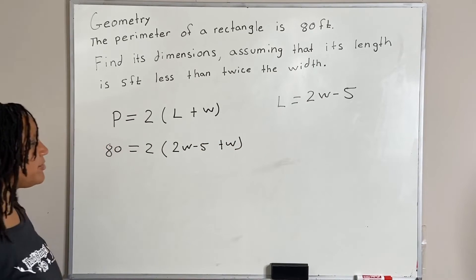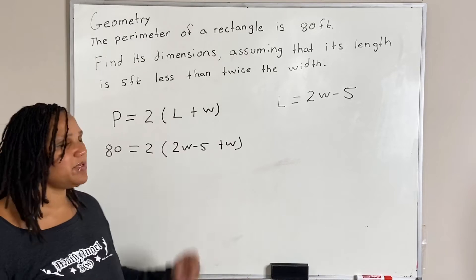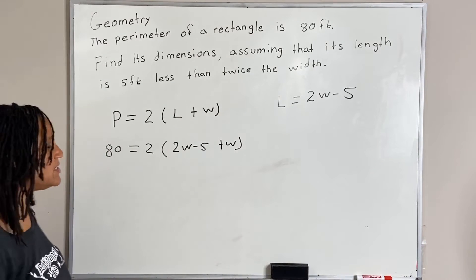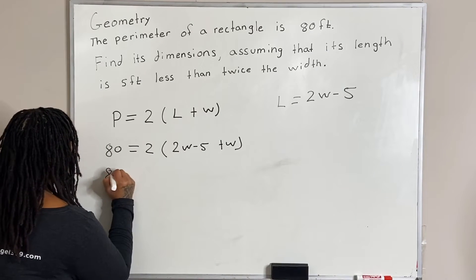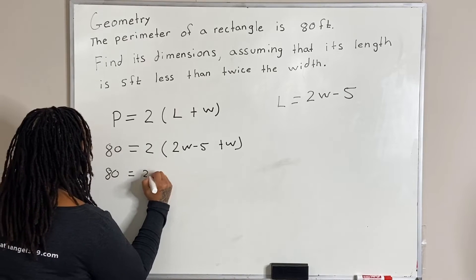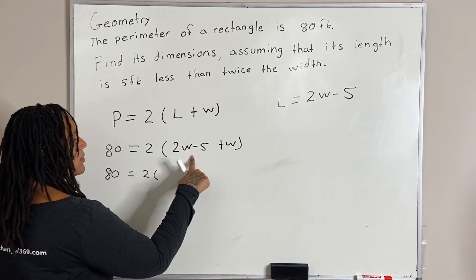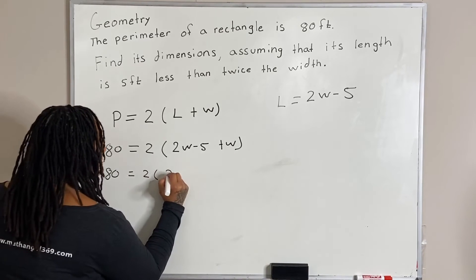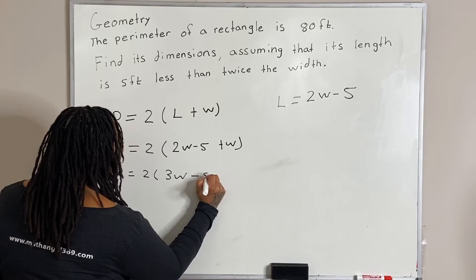Now remember order of operations, we are going to compute what is inside of the parentheses first. So we have 80 is equal to 2 times 2w plus 1w is 3w, and then we have minus 5.